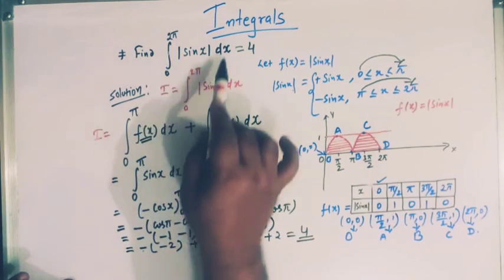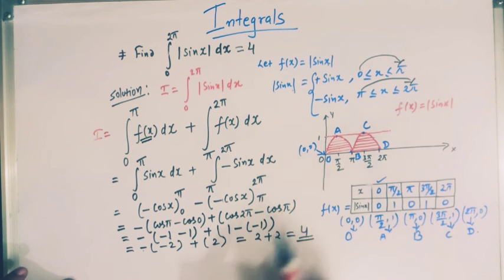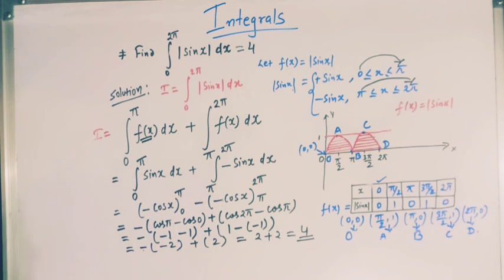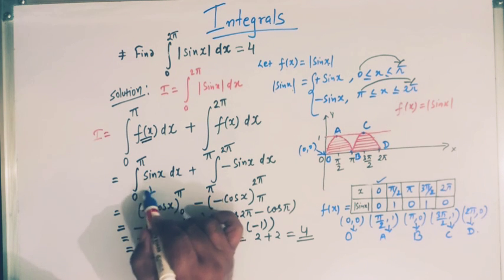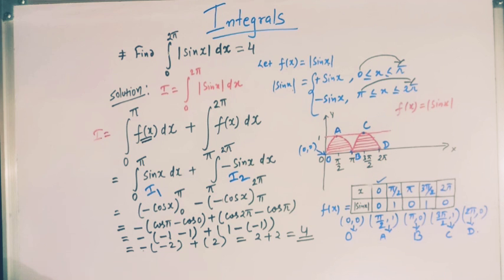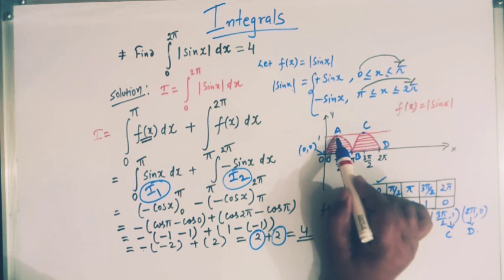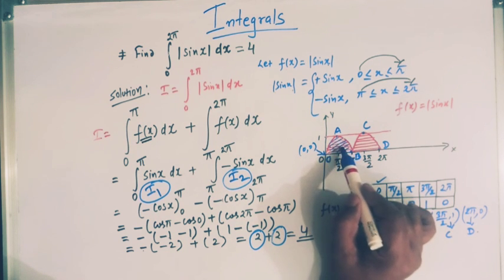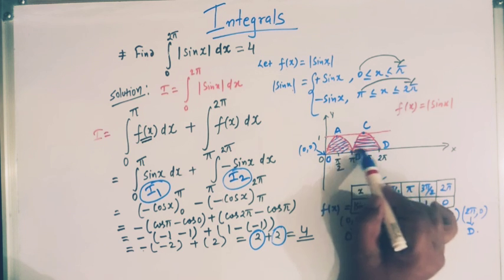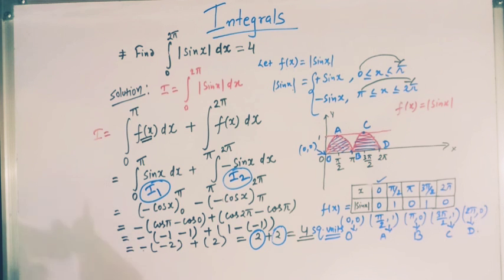The geometrical representation of this integral is the total shaded area shown here. The first integral I₁ (from 0 to π of sin x dx) equals 2, and the second integral I₂ (from π to 2π of −sin x dx) also equals 2. So the area of each arch is 2 square units and the total area is 4 square units. This is how we solve this problem.